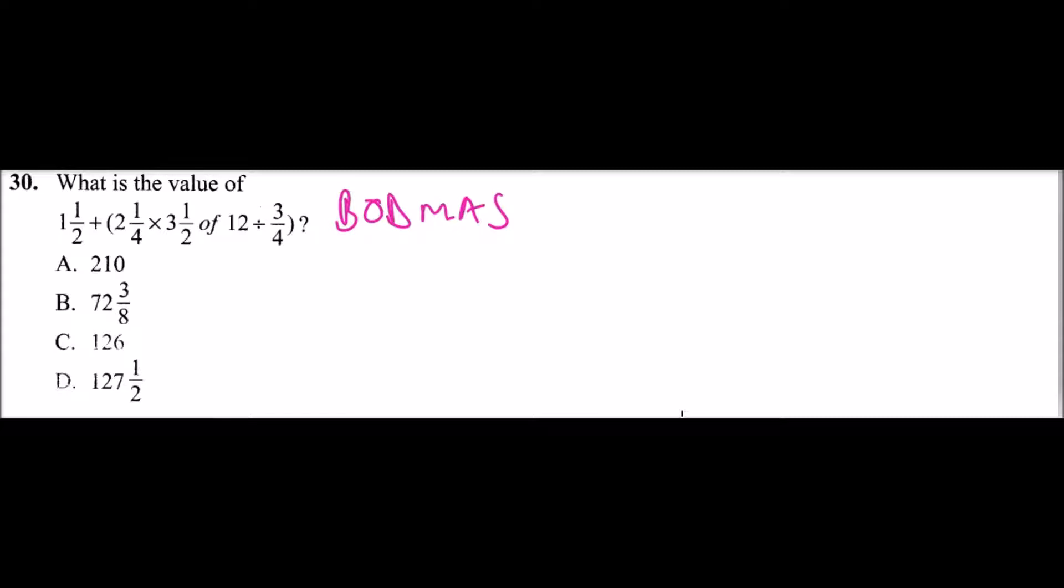One and a half is the same as 1 × 2 + 1, that is 3/2. Inside the bracket we have 'of', so you start with 'of'. Let's first write our fractions in improper form.